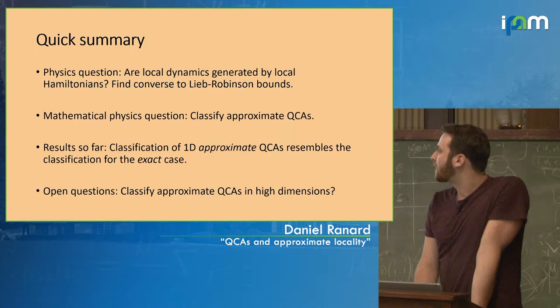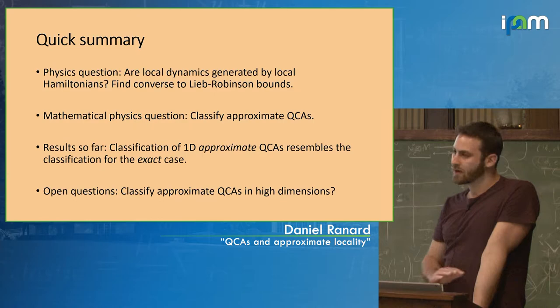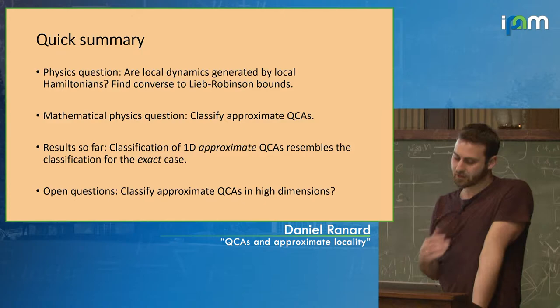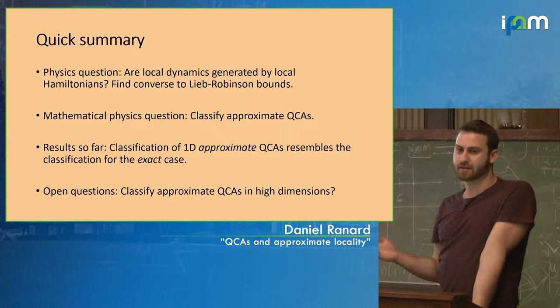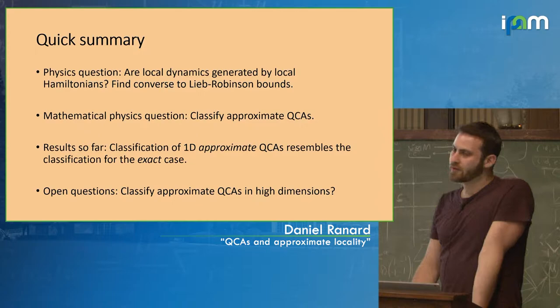A quick summary of the questions and answers. The physics question is: are local dynamics generated by local Hamiltonians? The mathematical physics question is: can we classify approximate QCAs? So far what we can do is classify 1D QCAs, and the punchline is that this classification very closely resembles the strict case classification. I'll talk about an index which is basically just the GNVW index, but upgraded to deal with these tails.